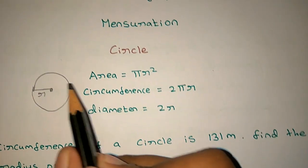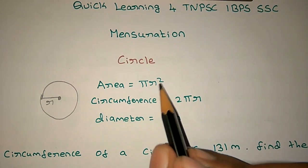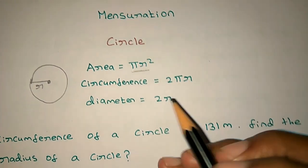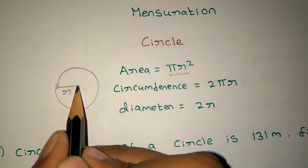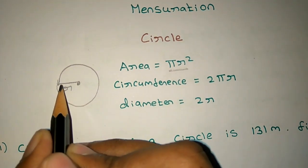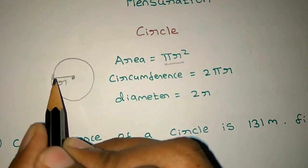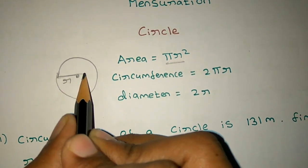What are the formulas for the circle? Area equals pi R square. The radius is from the midpoint, and the diameter is the full arc across the circle.